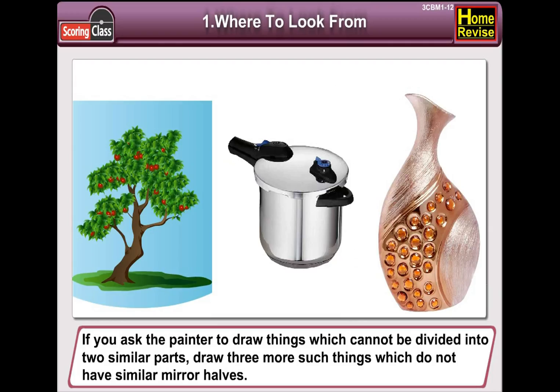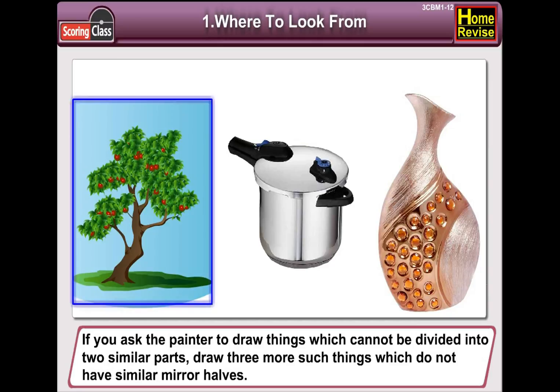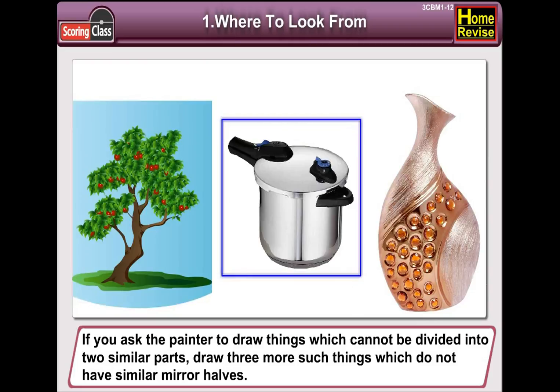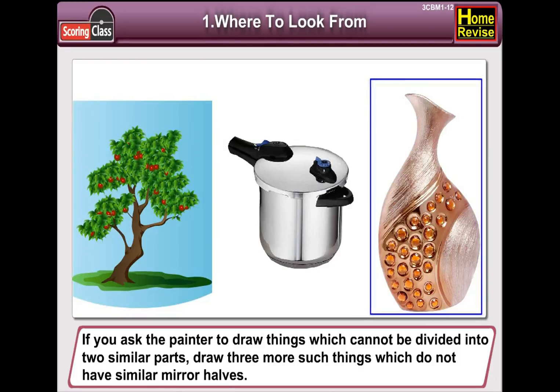If you ask the painter to draw things which cannot be divided into two similar parts, draw three more such things which do not have similar mirror halves. Here are things which do not have similar halves. Number one could be tree, then a cooker, flowers, spoon, etc.